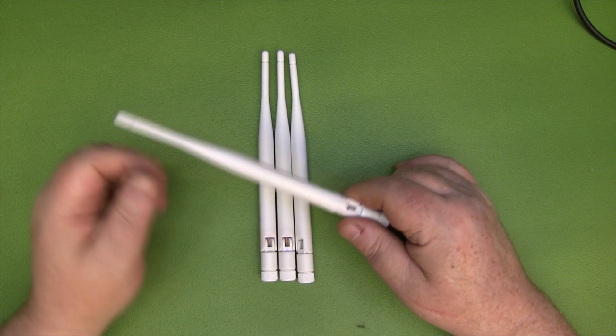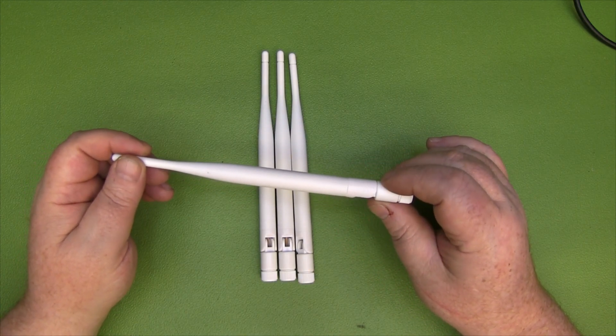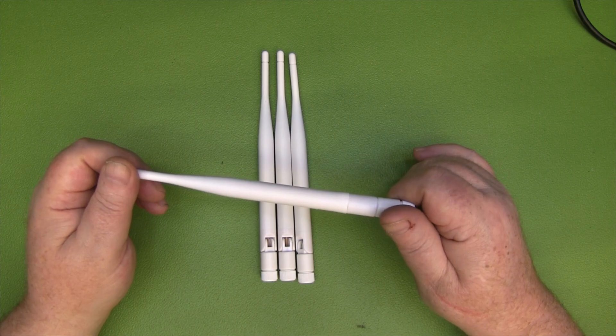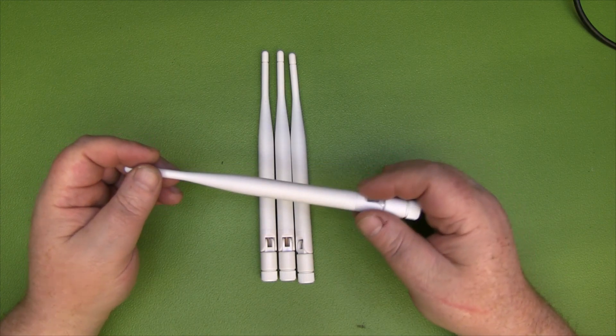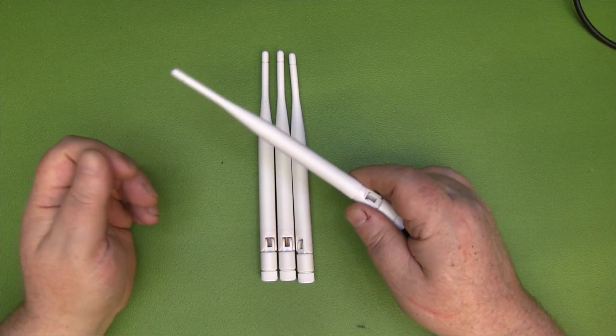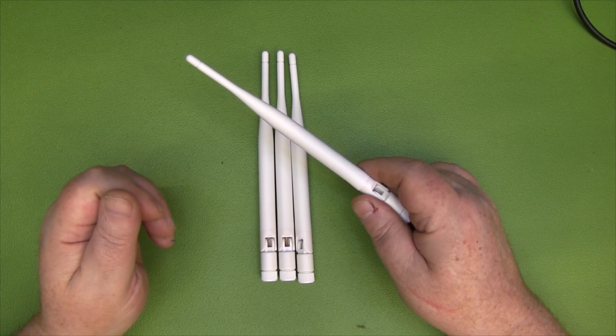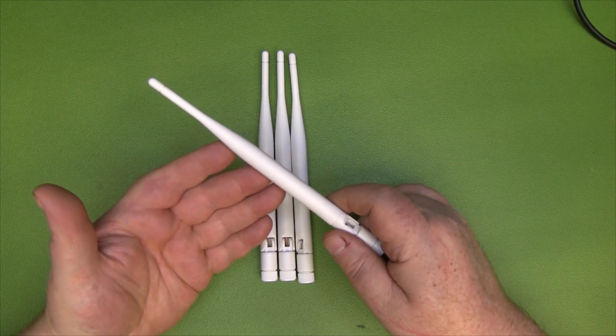But I just want to show you the response on the spectrum analyzer and quickly show you the design of this. It's an unusual design - the measurements are spot on for 2.4 gigahertz, but the way they've constructed this on the inside is quite interesting. I've never seen a construction design like this before, it's pretty unusual.